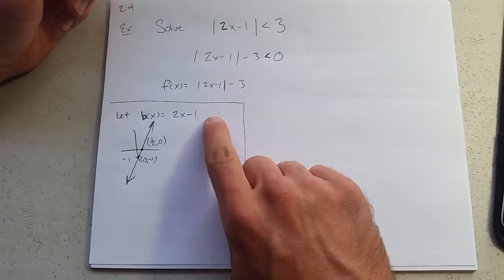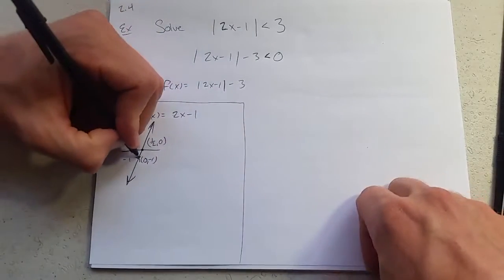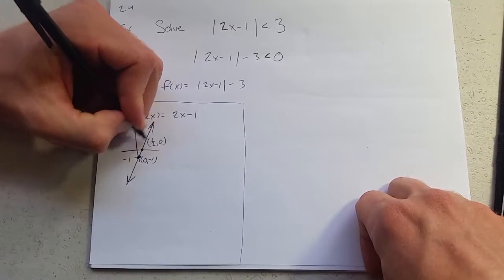So this is b of x. Here's the graph. Y-intercept negative 1, x-intercept one half.